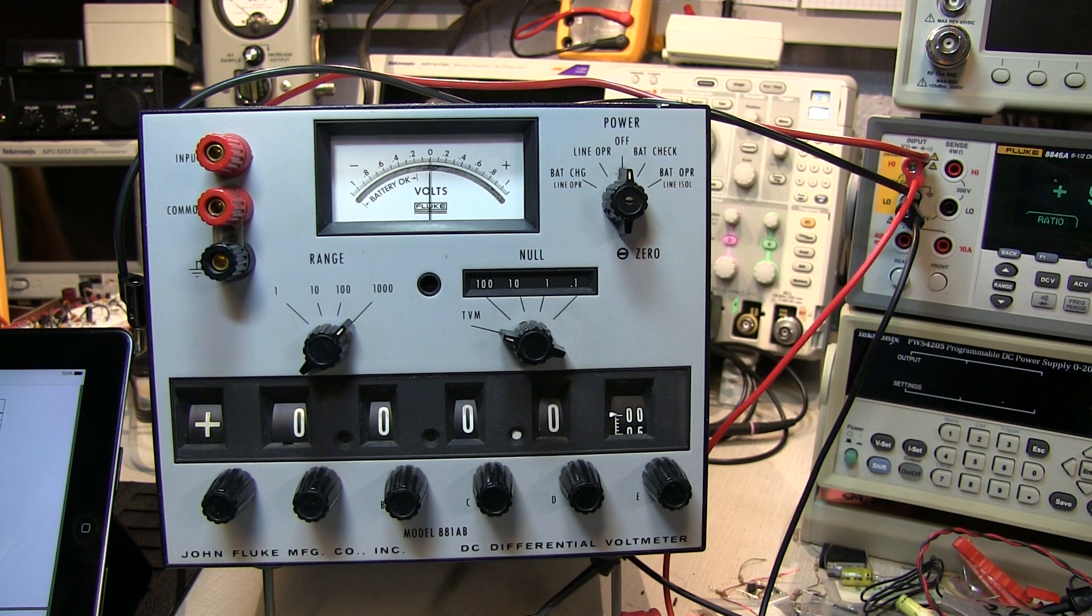In today's short video, we're going to take a quick look at this interesting piece of vintage test equipment, the Fluke Model 881A Differential Volt Meter.